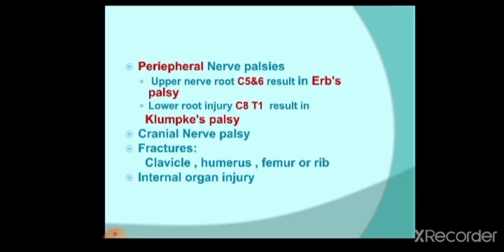Birth injury can affect soft tissue, or the brachial plexus nerve roots. Injury to the upper roots C5 and C6 results in Erb's palsy, while injury to the lower roots C8 and T1 results in Klumpke's palsy. Cranial nerve injury can also occur. Fractures may include fracture of the humerus, clavicle, or femur, or injury to internal organs.